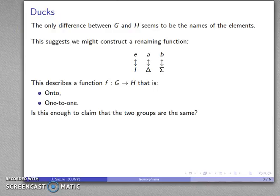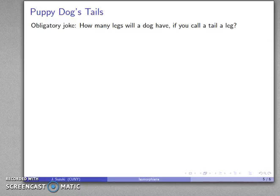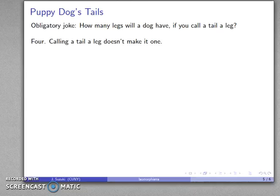So we have a function that is both onto and one-to-one. The natural question to ask is: is this enough? In other words, is it enough for a renaming function to be one-to-one and onto? Here's an obligatory joke: how many legs will a dog have if you call a tail a leg? Four — because calling a tail a leg doesn't make it one.